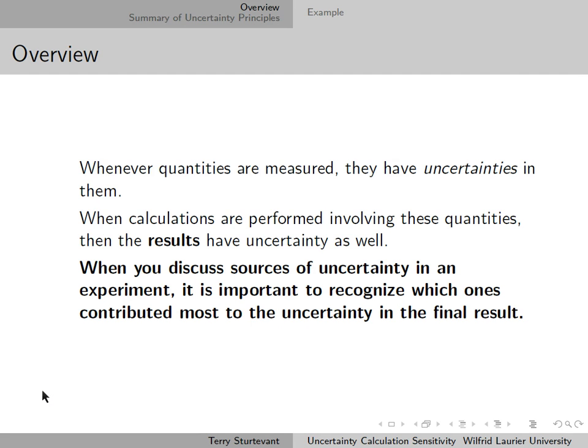When you discuss the sources of uncertainty in an experiment, it's important to recognize which ones contributed most to the uncertainty in the final result.